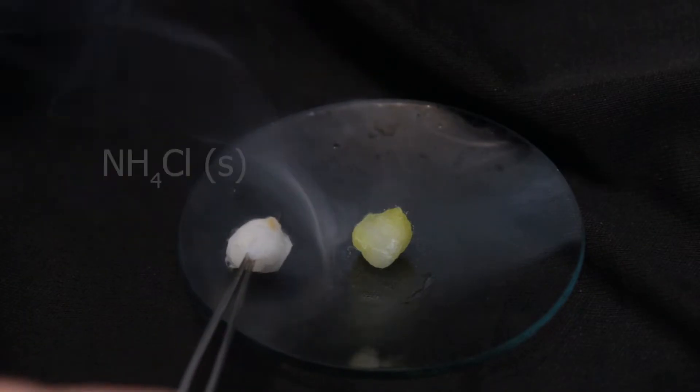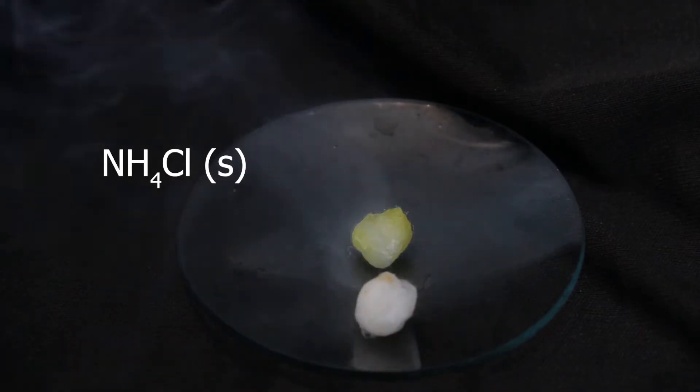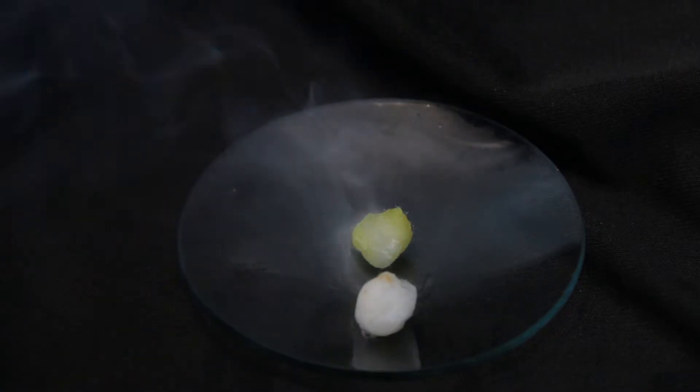What is this white smoke? White smoke is ammonium chloride, a salt, a solid. These tiny crystals which formed in the air look like smoke.